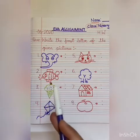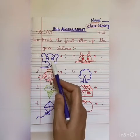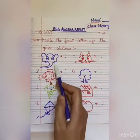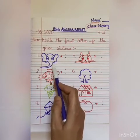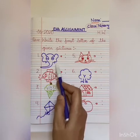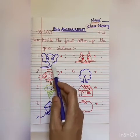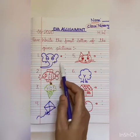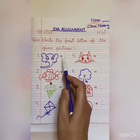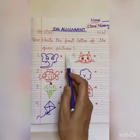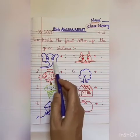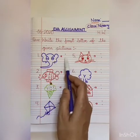This work you have to do yourself. Now children, look at the first picture. Which animal is this? Yes, this is an elephant. So the first letter of an elephant is E. You will write E here. E, elephant.